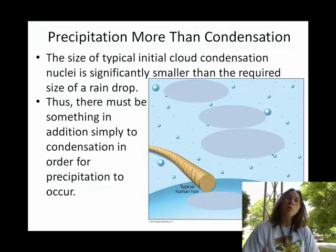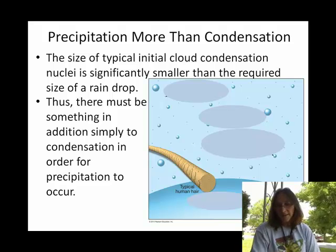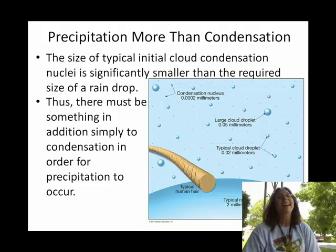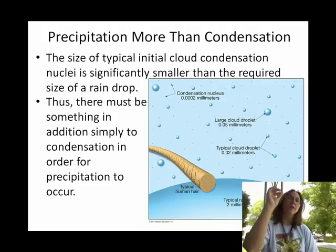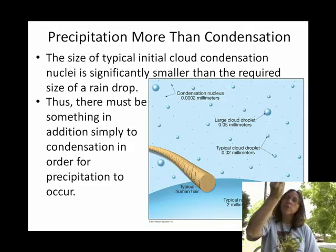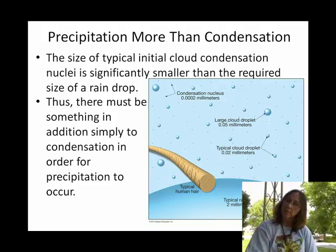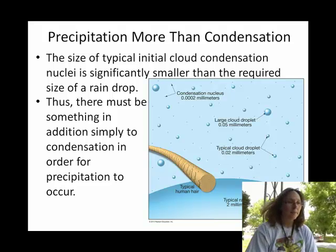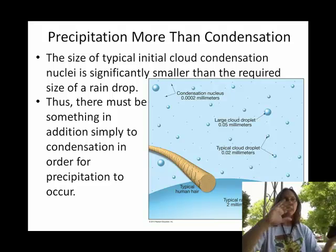There needs to be more going on than that initial nucleation process. At the crux of what makes those droplets grow — after condensation has begun — is that a droplet has to reach a certain size to actually begin falling from the cloud. Basically, there's an assortment of sizes of liquid water up there in the cloud.